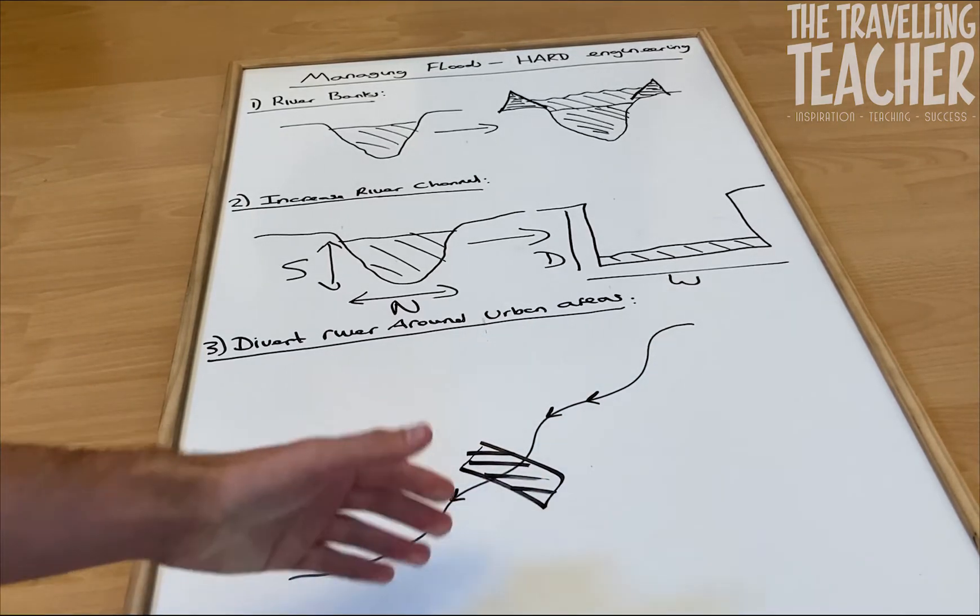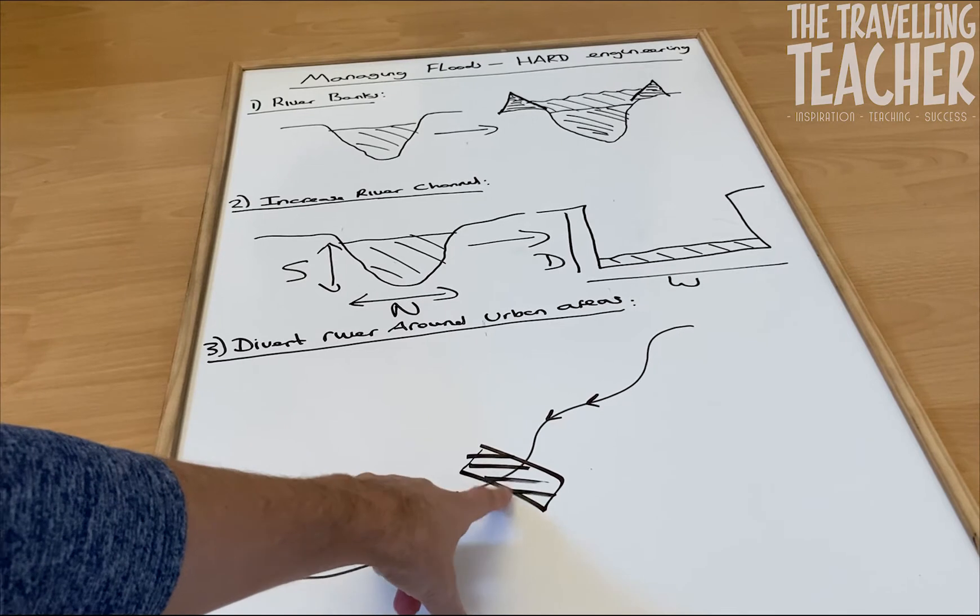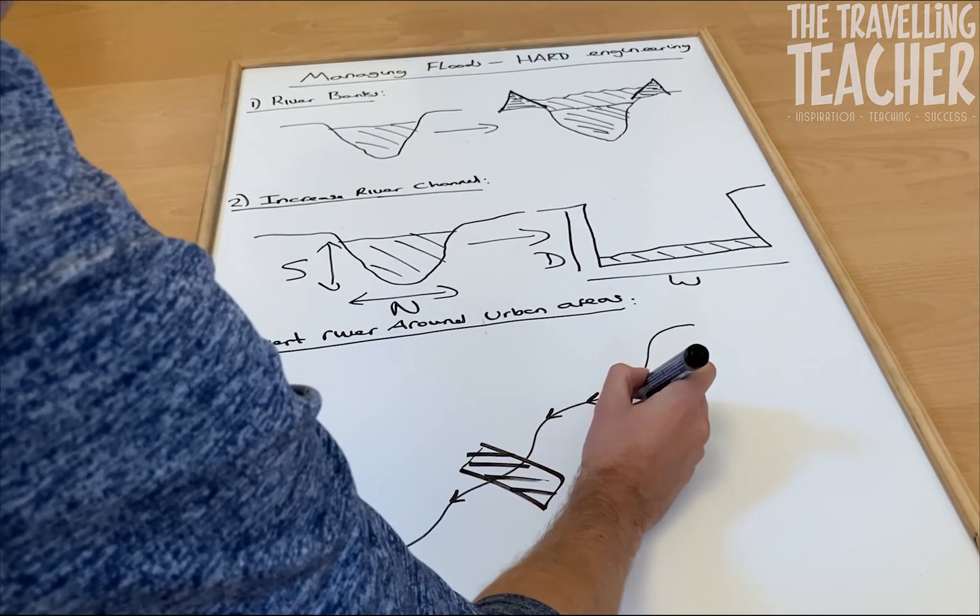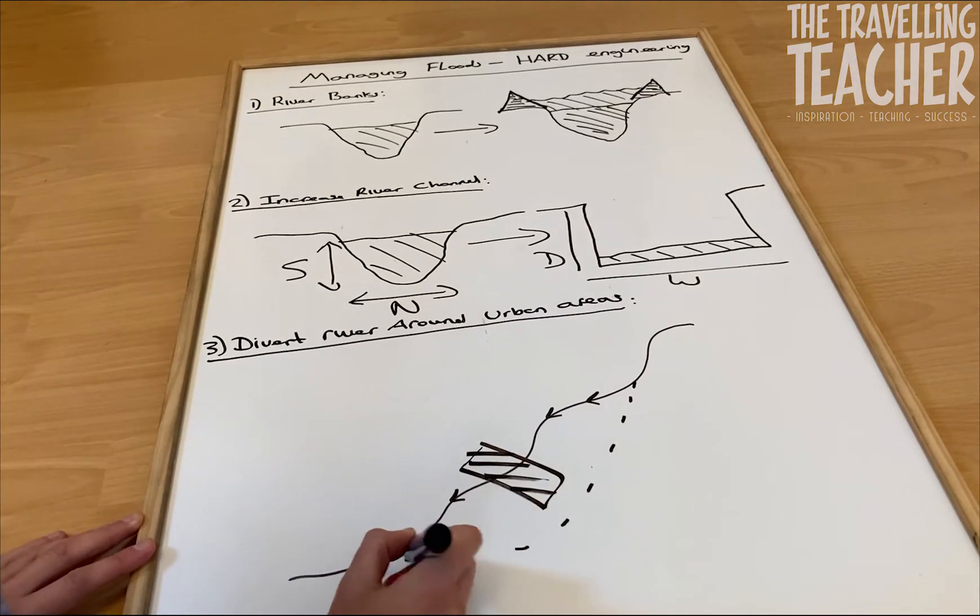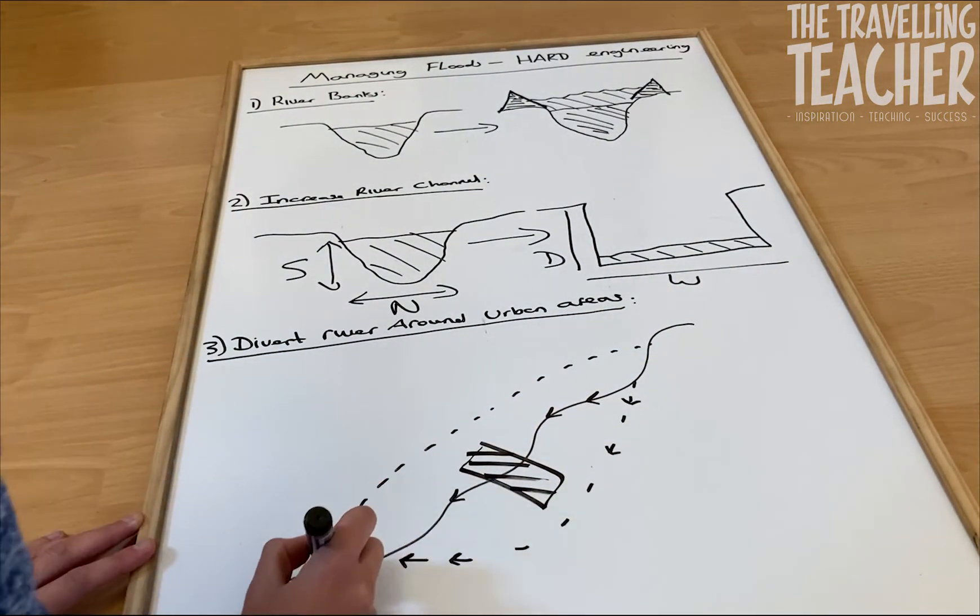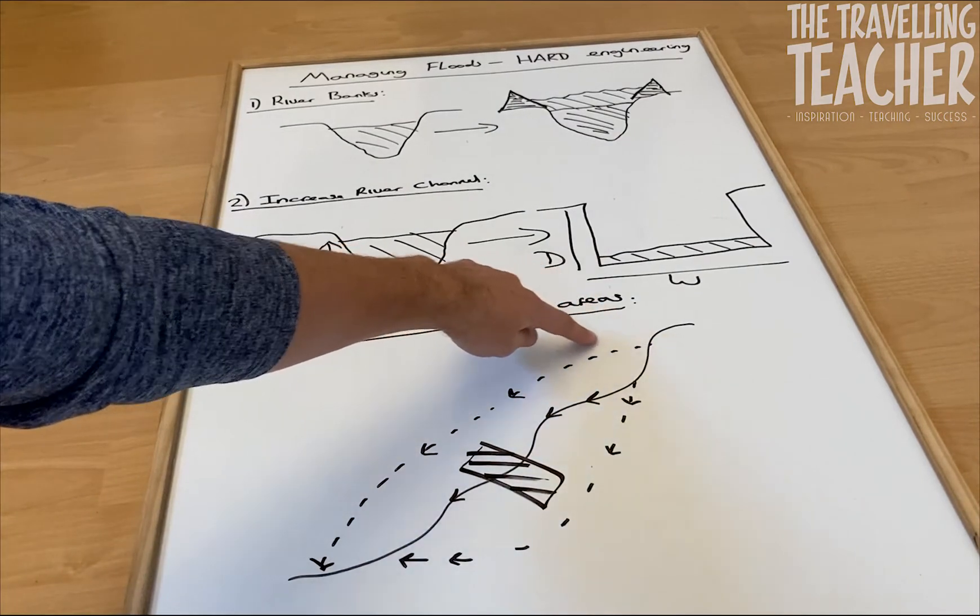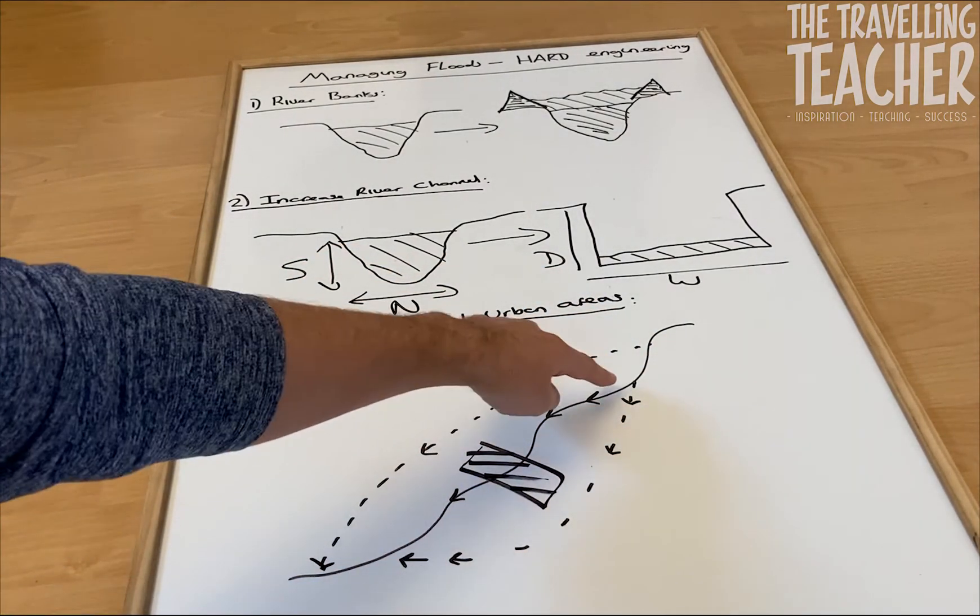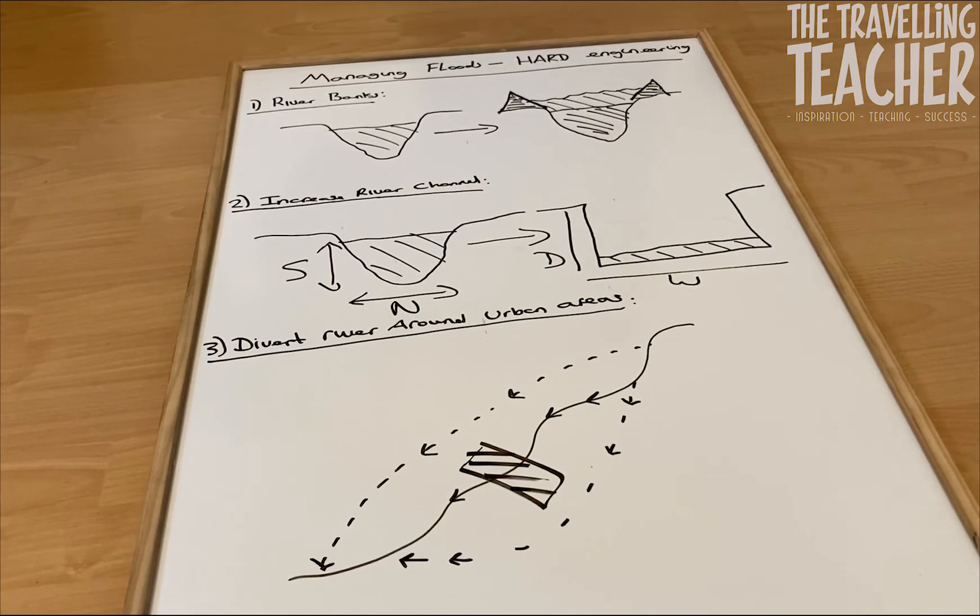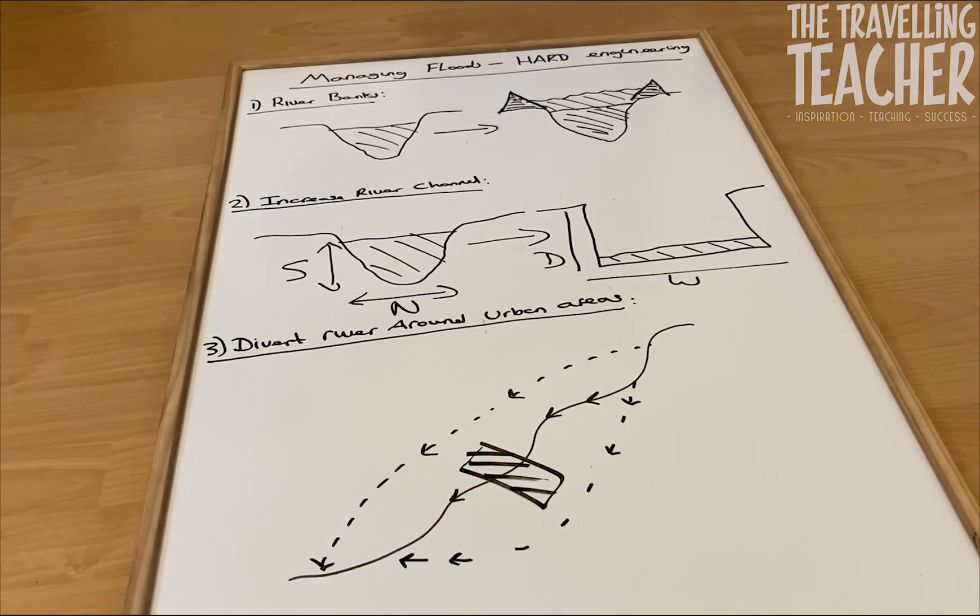Now, of course, what we don't want is we don't want too much water flowing through the city because obviously a city's got impermeable land surfaces. That's going to lead to a lack of infiltration, faster surface runoff and ultimately more chance that this river flowing through the city is going to flood. So what we want to do is we want to reduce the amount of water flowing through the city at any one point. So we build these diversion channels that go around the city centre and meet up with the river at a later point in its course. So therefore, we've got water going around to the north of the city, to the south of the city. So the amount of water actually flowing through the city is minimal. So there you have it. There's your three hard engineering strategies. Increase the size of the river banks, increase the size of the river channel and divert river around urban areas.